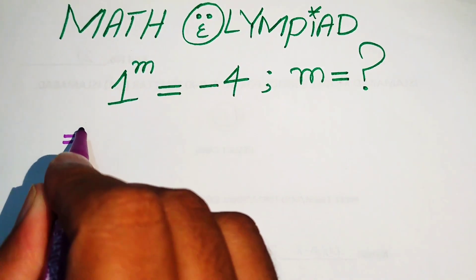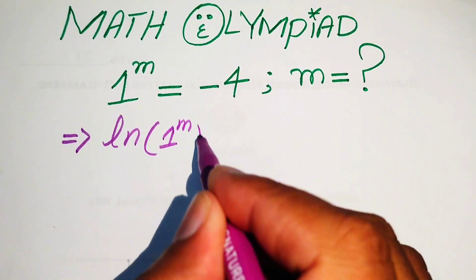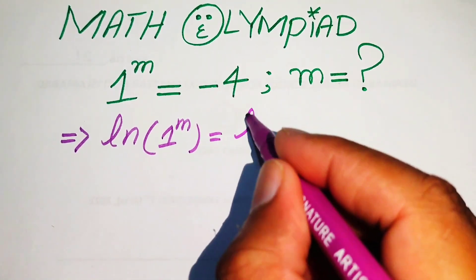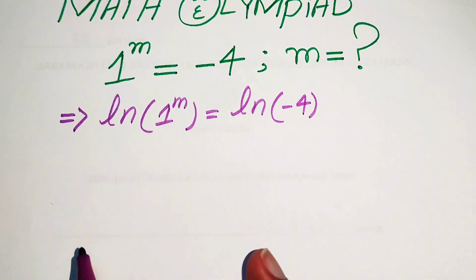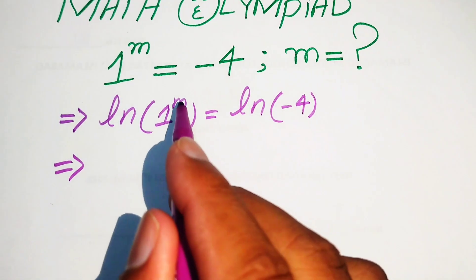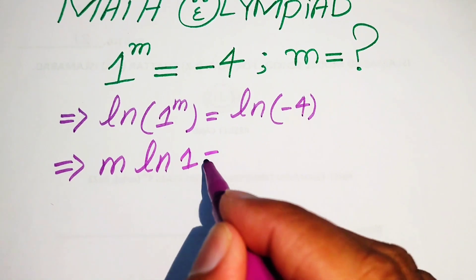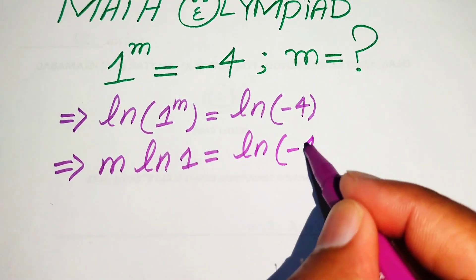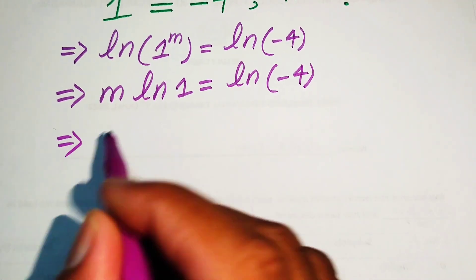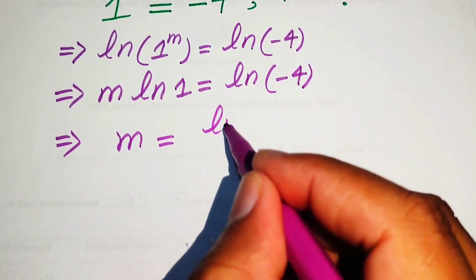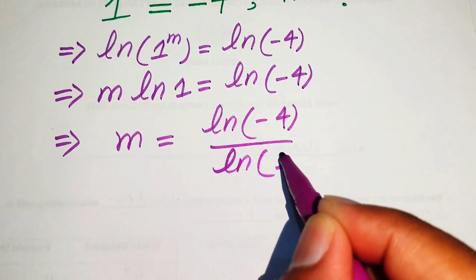First, we take a natural log on both sides of this equation. It is written as log of 1 to the power of m equals log of minus 4. Using the log power property on the left-hand side, we move m to the front: m times log 1 equals log of minus 4. Moving log 1 to the right-hand side, this implies m equals log of minus 4 divided by log of 1.